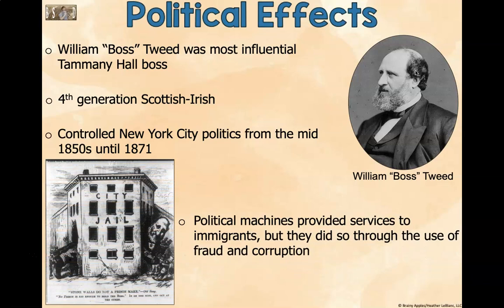William Boss Tweed was the most influential Tammany Hall boss — he was fourth-generation Scots-Irish and controlled New York City politics from the mid-1850s until 1871. Political machines provided services to immigrants, but did so through corruption. They paid these people off, which was technically illegal.